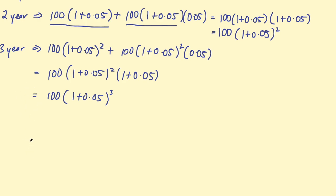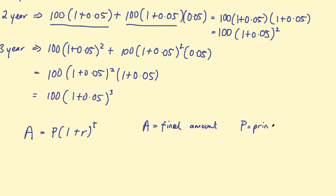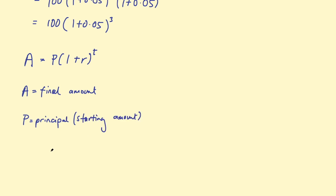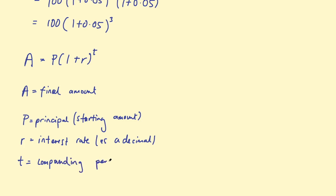Let's generalise this. We write the amount earned as A, equal to P — the principal, the starting amount you invest or borrow — multiplied by (1 + r) to the power of t. A is the final amount, P is the principal starting value, r is the interest rate as a decimal, and t is the number of compounding periods. So if it's three years, T is going to be three.